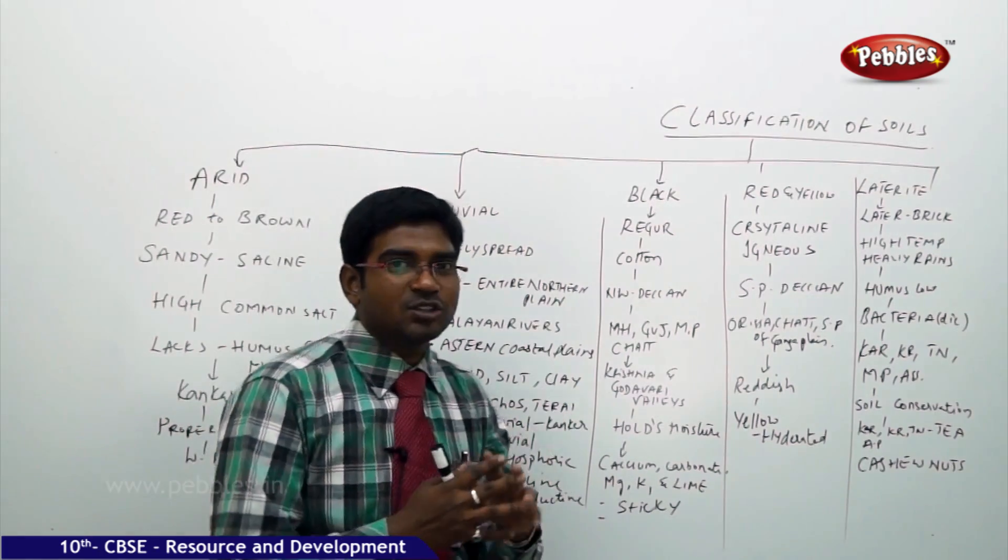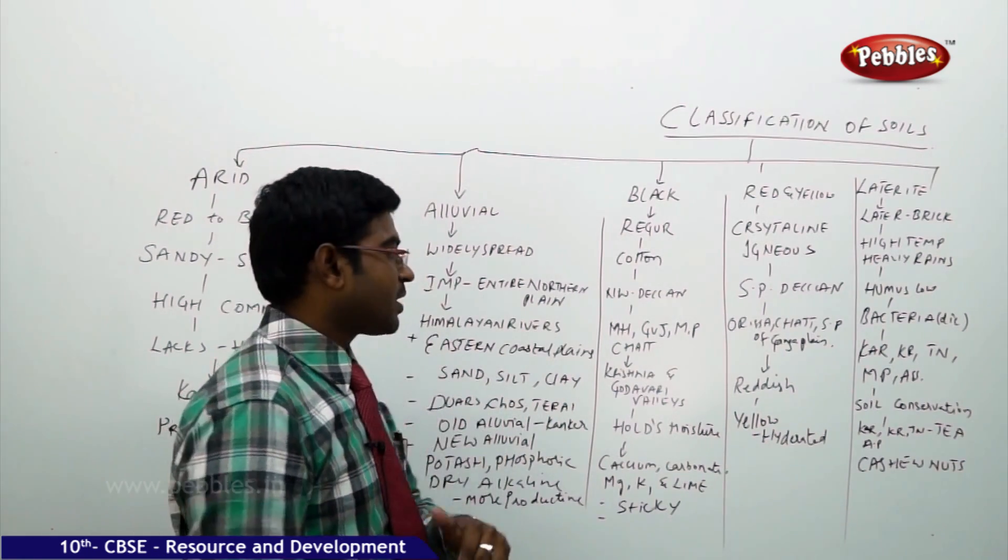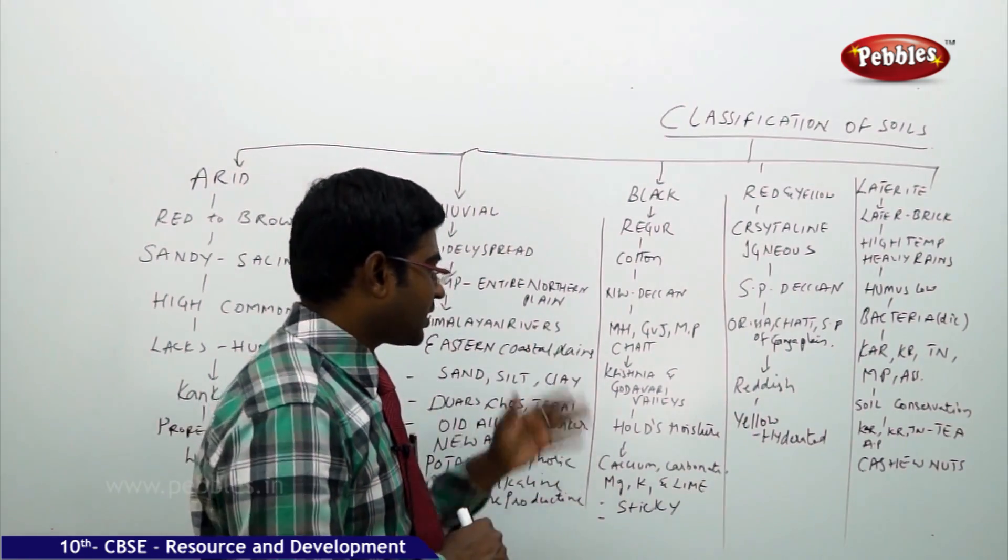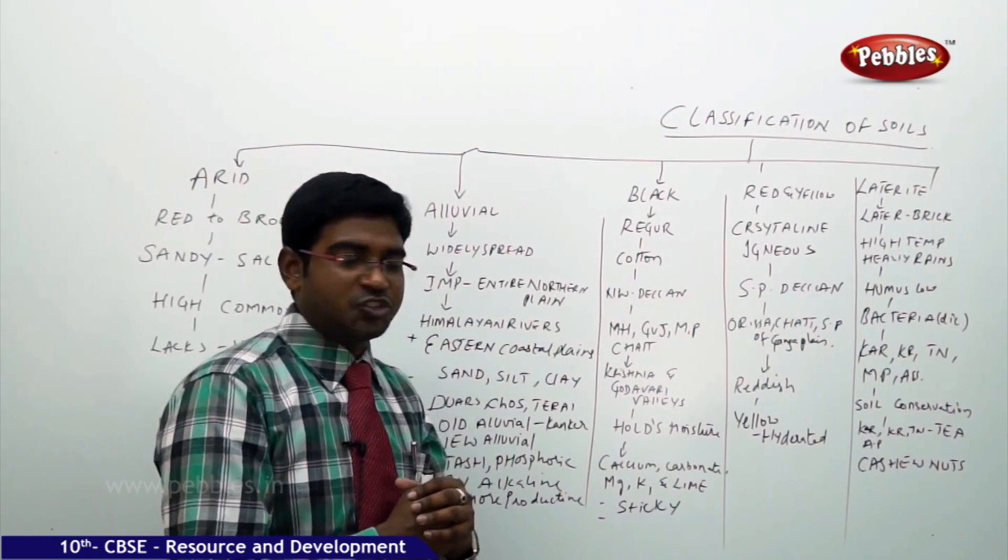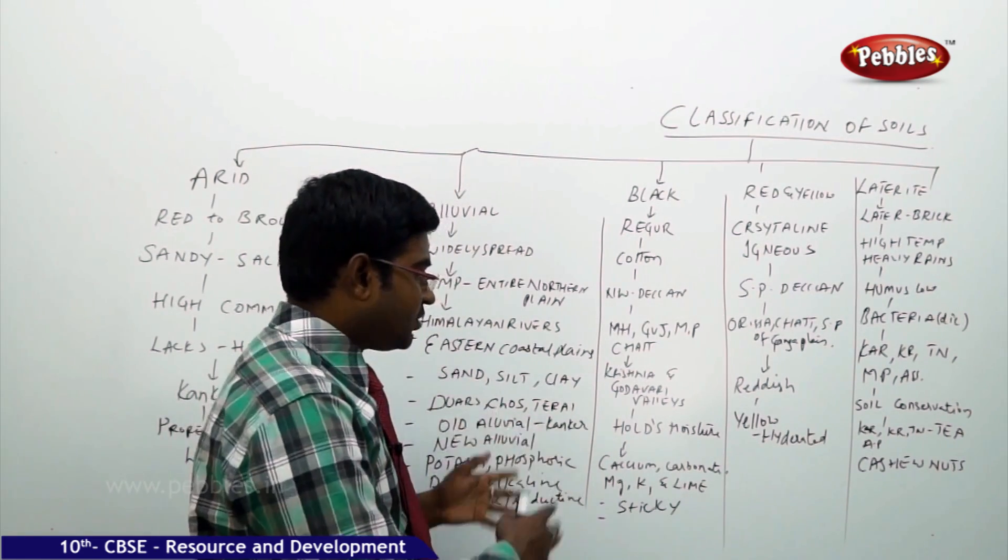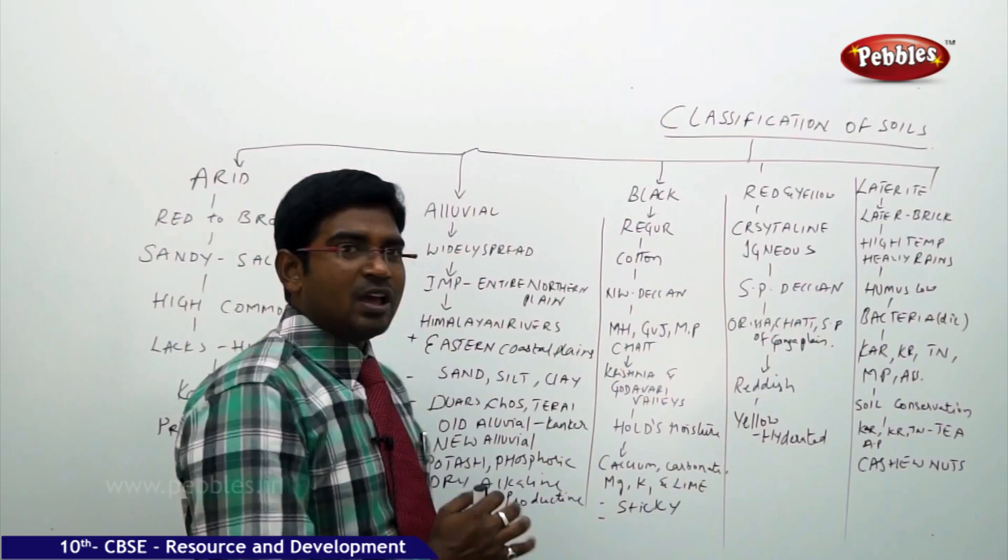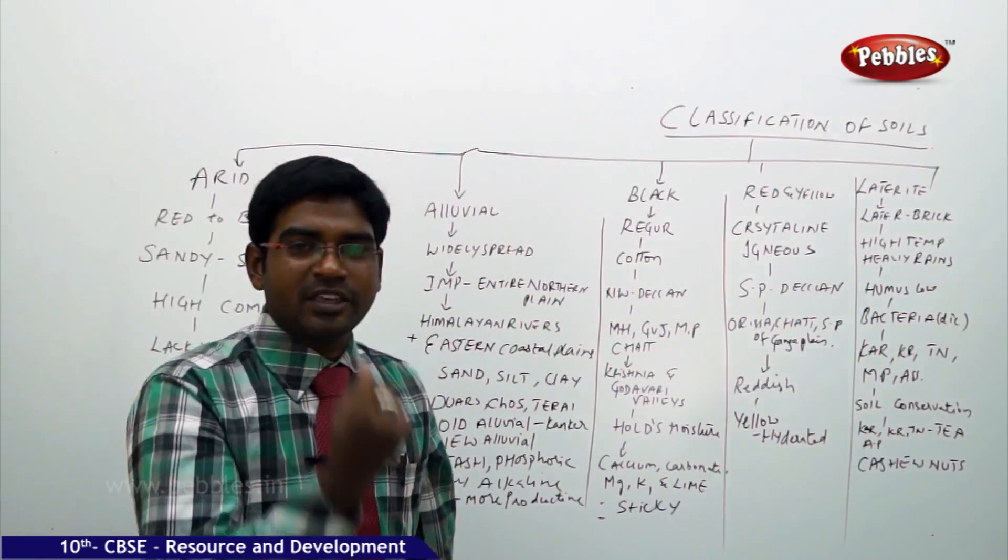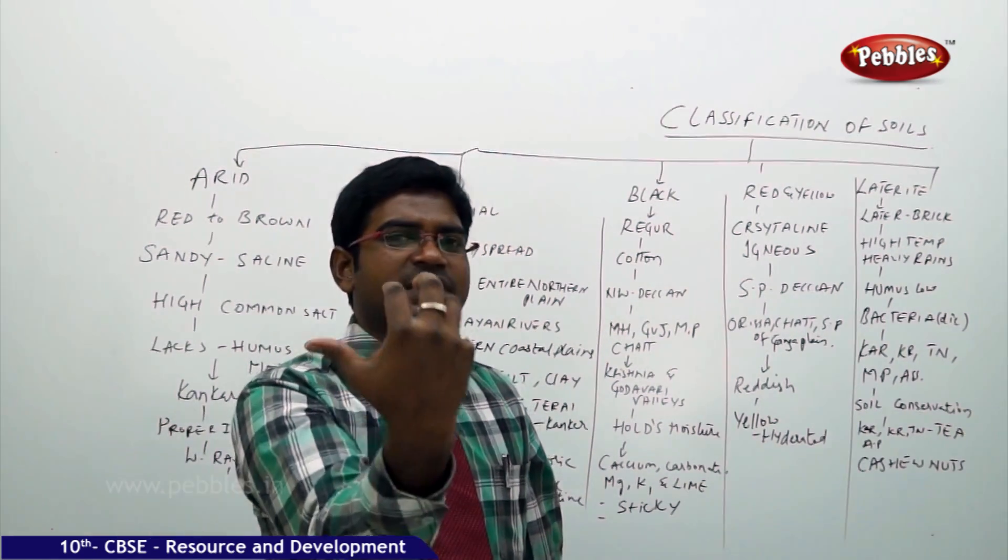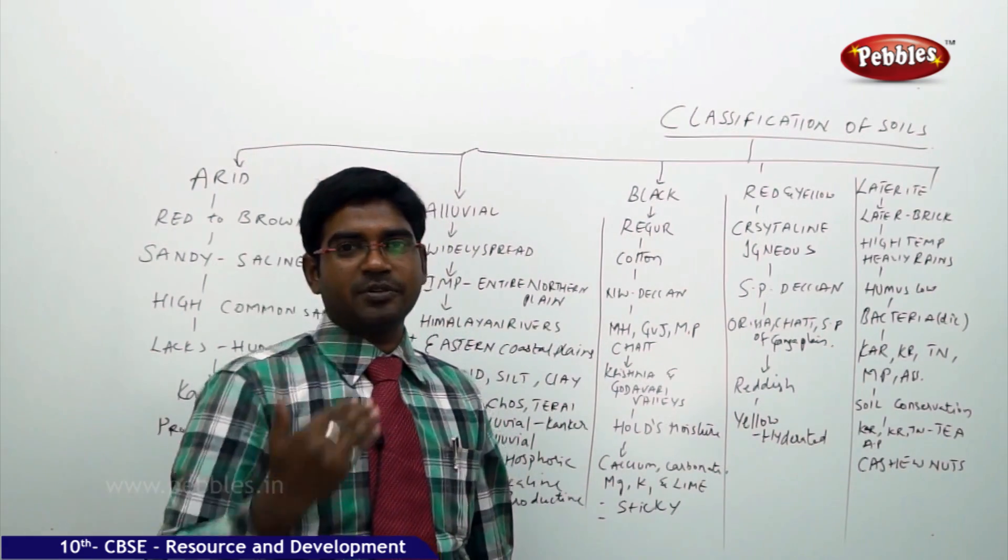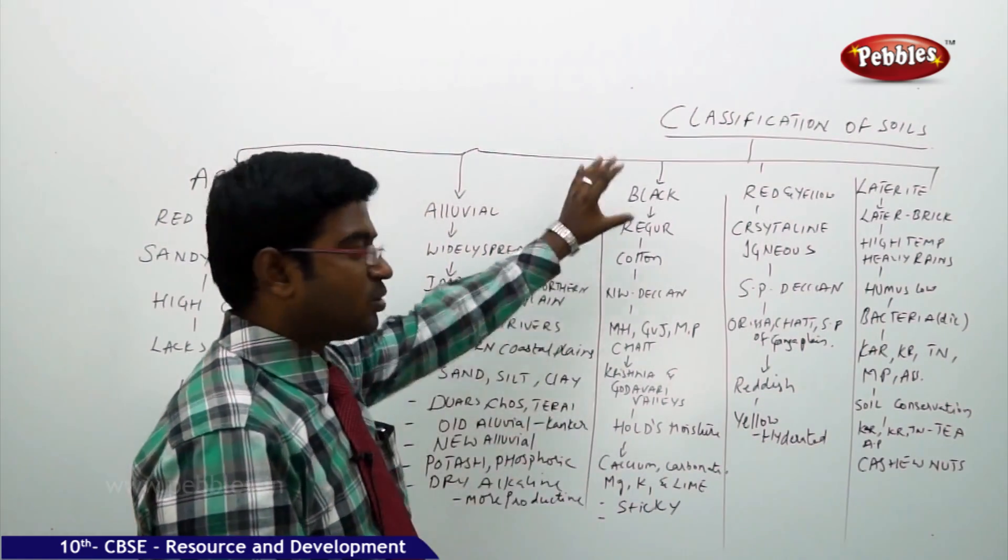Then this is found in the northwestern part of Deccan covering the states like Madhya Pradesh, Gujarat, Maharashtra and Chhattisgarh where the rivers have contributed for this one are Krishna, Godavari Valley regions. In these regions you find it more. It holds more amount of moisture and it also contains the chemicals like calcium carbonate, magnesium, potassium and lime where it is very sticky in nature. Once it gets wet immediately you need to start to do the cultivation and process and everything. Once it gets wet it becomes very very sticky where it is not easy for you to do cultivation. That is a special feature of black soils. It is a very very fertile soil actually. It is also known as regur cotton soil.